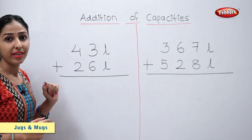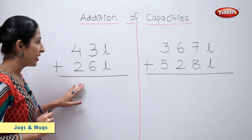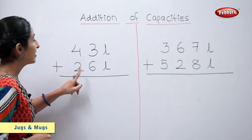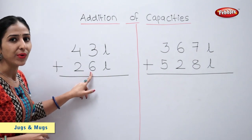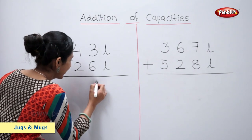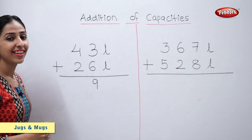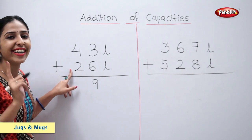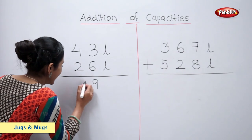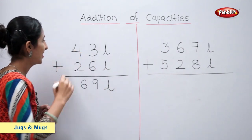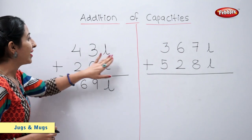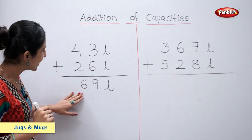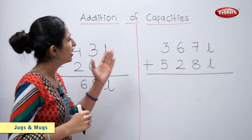Now let's solve this example. 43 litres plus 26 litres is equal to how much? 3 plus 6 is equal to 9. 4 plus 2 is equal to 6. So, 43 litres plus 26 litres is equal to 69 litres.